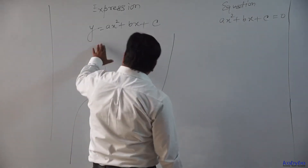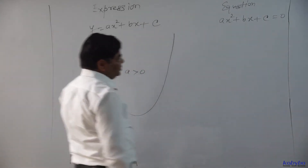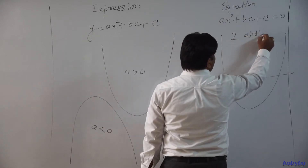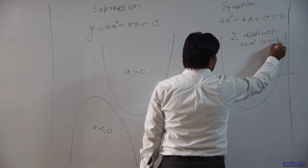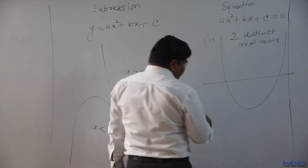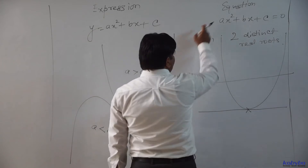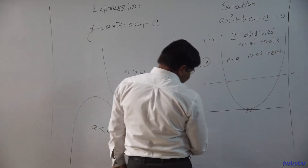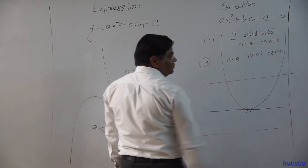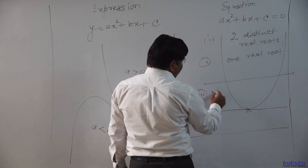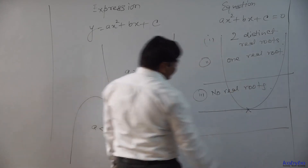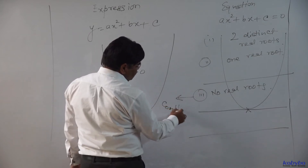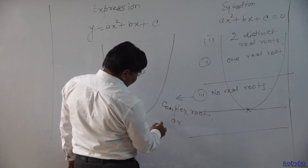Now, if this graph intersects the x-axis at two distinct points, then the quadratic equation will have two distinct real roots. If this graph touches the x-axis at one and only one point, then this quadratic equation will have one real root. If the x-axis neither intersects nor touches the graph, then this quadratic equation will have no real root — meaning it has complex or imaginary roots.